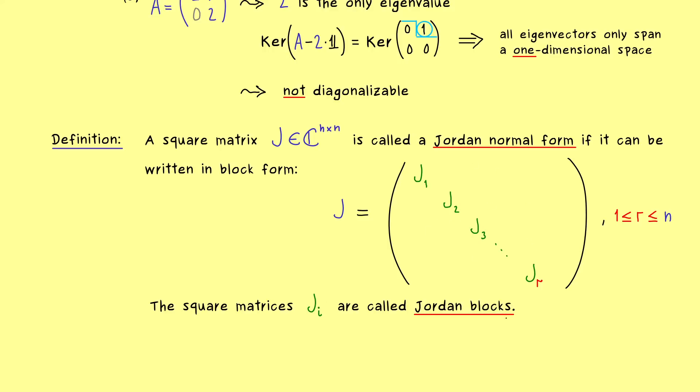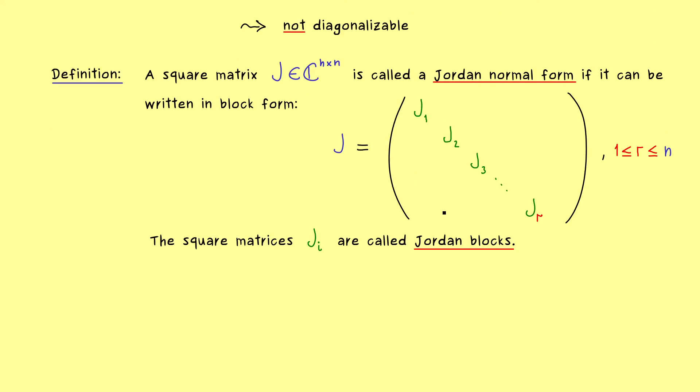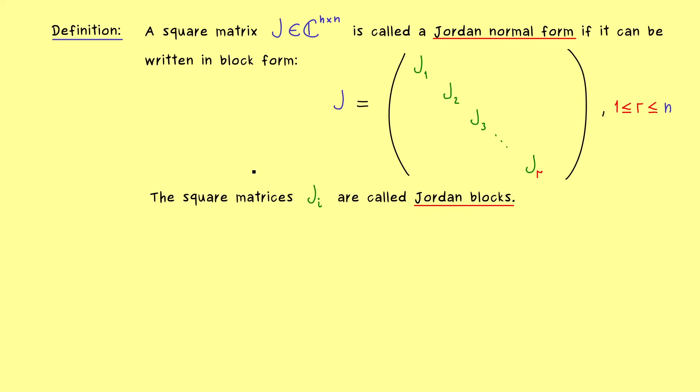Now this is important because these Jordan blocks are block matrices again. That means if we take a block out, then this block can be decomposed into square matrices again. Hence every J_i has square matrices on the diagonal as well. And now obviously for practical reasons these new matrices need a second index, and there let's say we go from 1 to m. So also here the sizes of the blocks could be different, but in total they should span the whole J_i block.